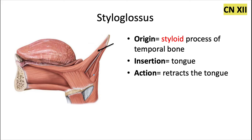The styloglossus is this thinner muscle up here. It originates from the styloid process of the temporal bone and of course enters into the tongue. The action of this one is to retract the tongue. Just looking at where these muscles are located and how those fibers are directed, that makes perfect sense. This one is also innervated by cranial nerve 12.